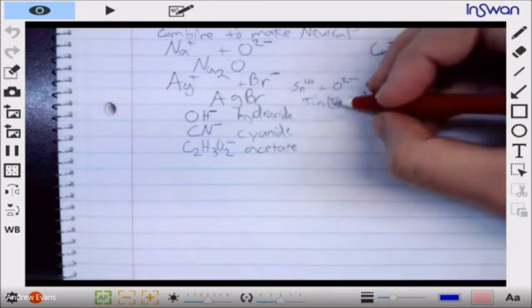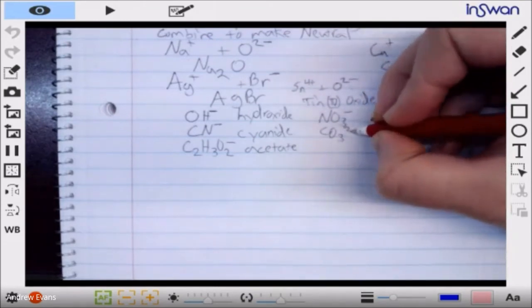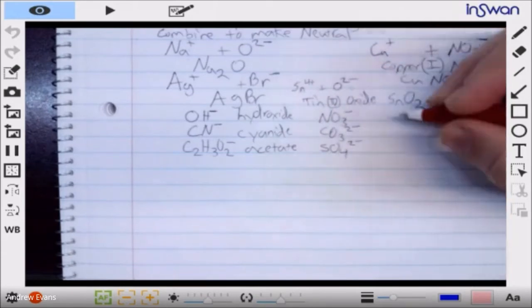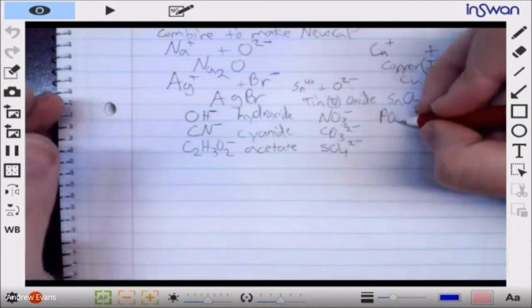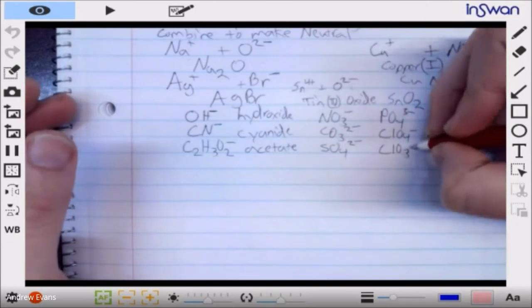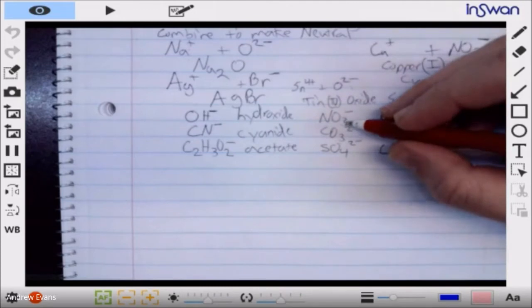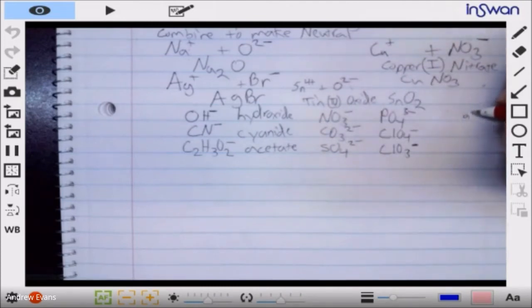And then we had our polyatomics, the oxyanions we typically saw were nitrate, carbonate, sulfate, phosphate, and our perchlorate and chlorate. There were a lot more than just these but these were the ones we saw with some degree of regularity. Those guys had special names that designated the oxygen count - if we have two different options, the -ate went to the more oxygens and the -ite went to the less oxygens, so like nitrate versus nitrite.